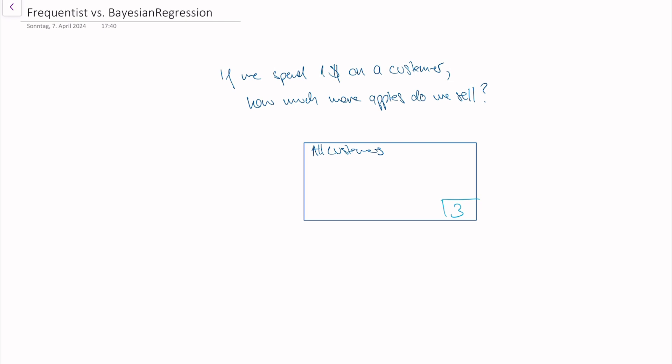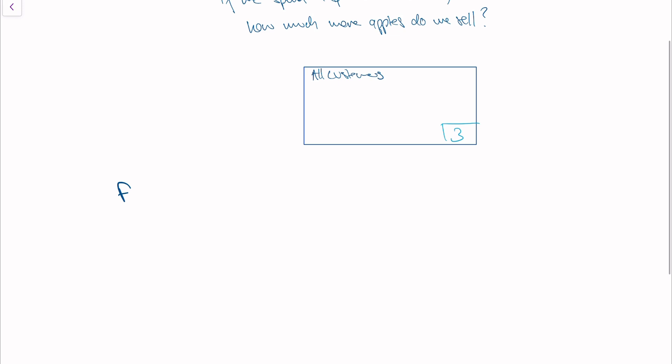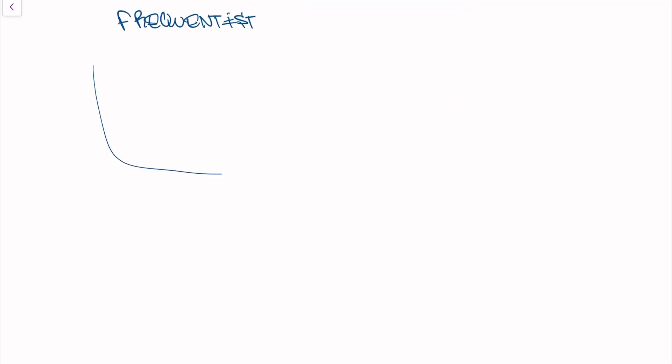So you analyze these data points that you have to answer the boss's question. Let's go first to what a frequentist statistician would do. I first plot the data points on this graph where we have the marketing for the customer on the x-axis and the apple sales on the y-axis. We have three data points and they are here, here and here. Let's just say this is 50 cents in marketing, this is 60 cents, and this is $1.50.